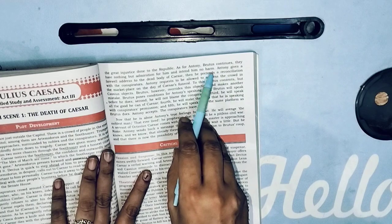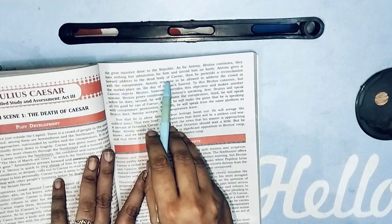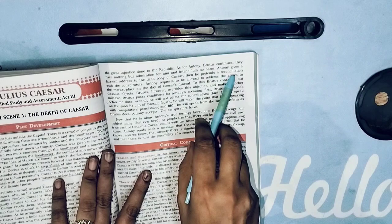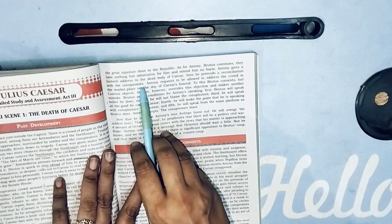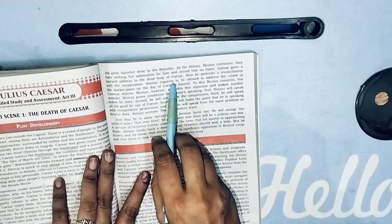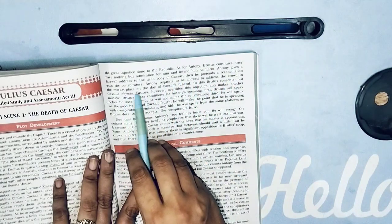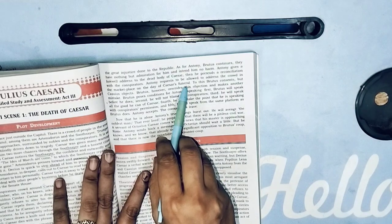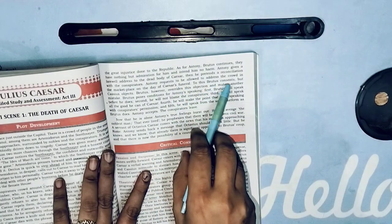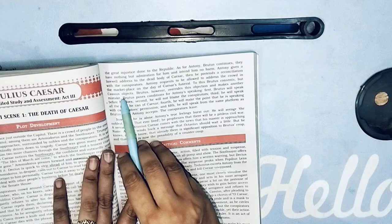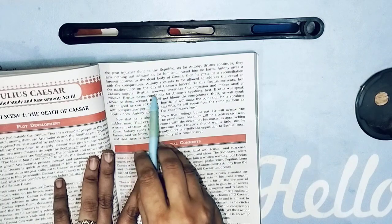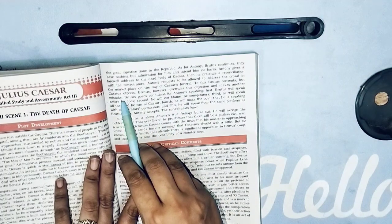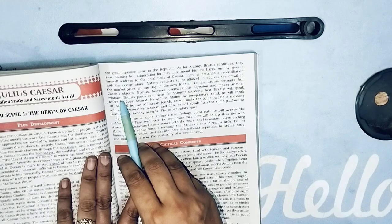Antony gives a farewell address to the dead body of Caesar. Then he pretends a reconciliation with the conspirators. Antony requests to be allowed to address the crowd in the marketplace on the day of Caesar's funeral. To this Brutus consents, but Cassius objects. Brutus however overrides this objection and makes another mistake.